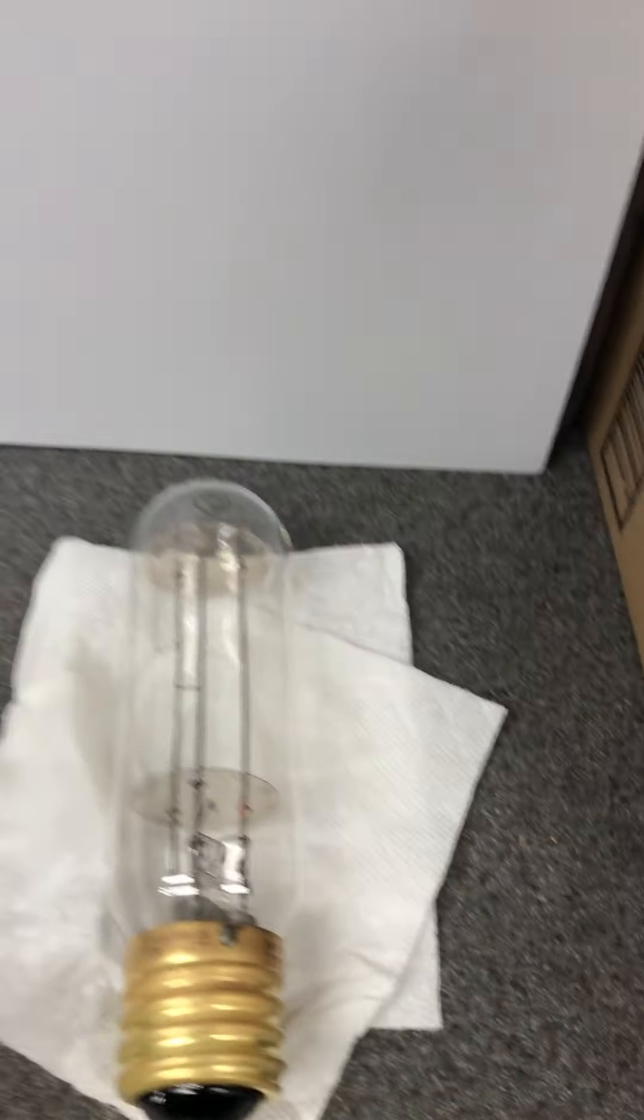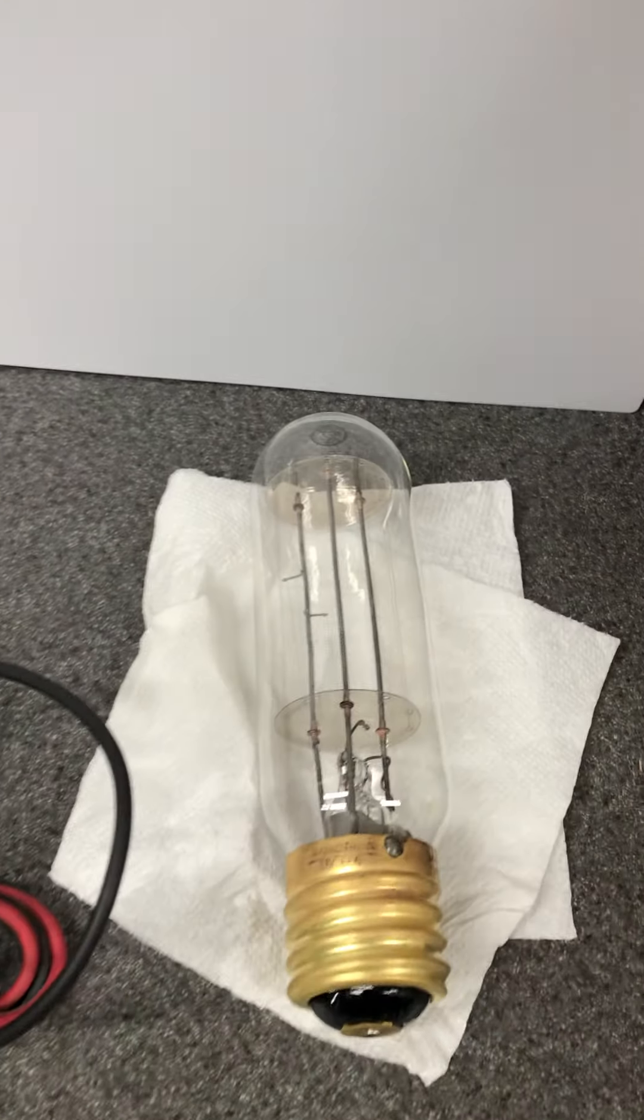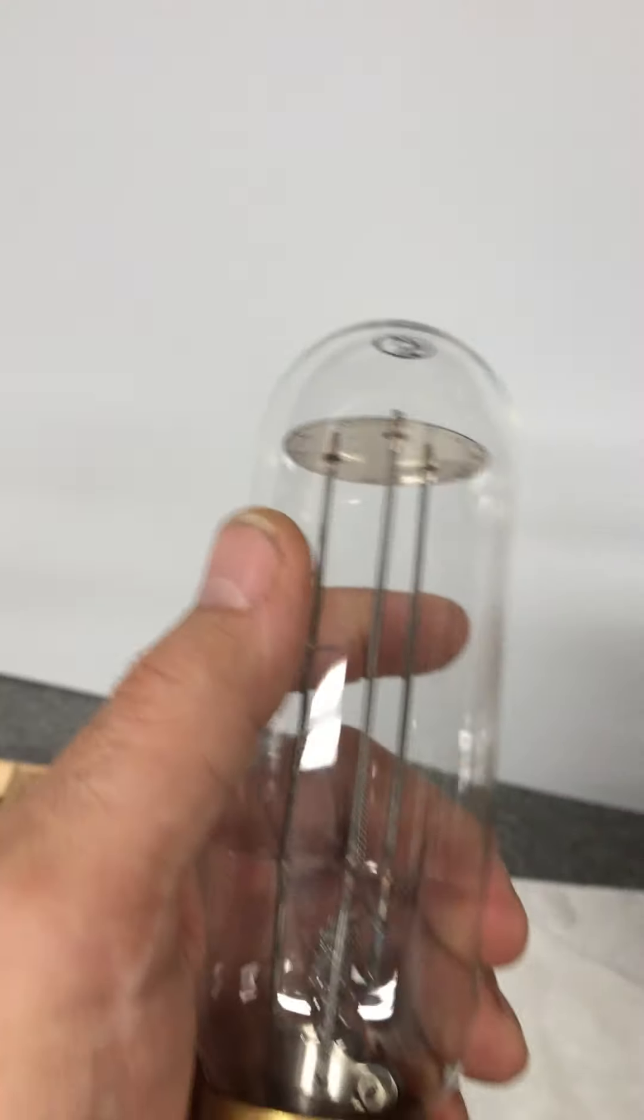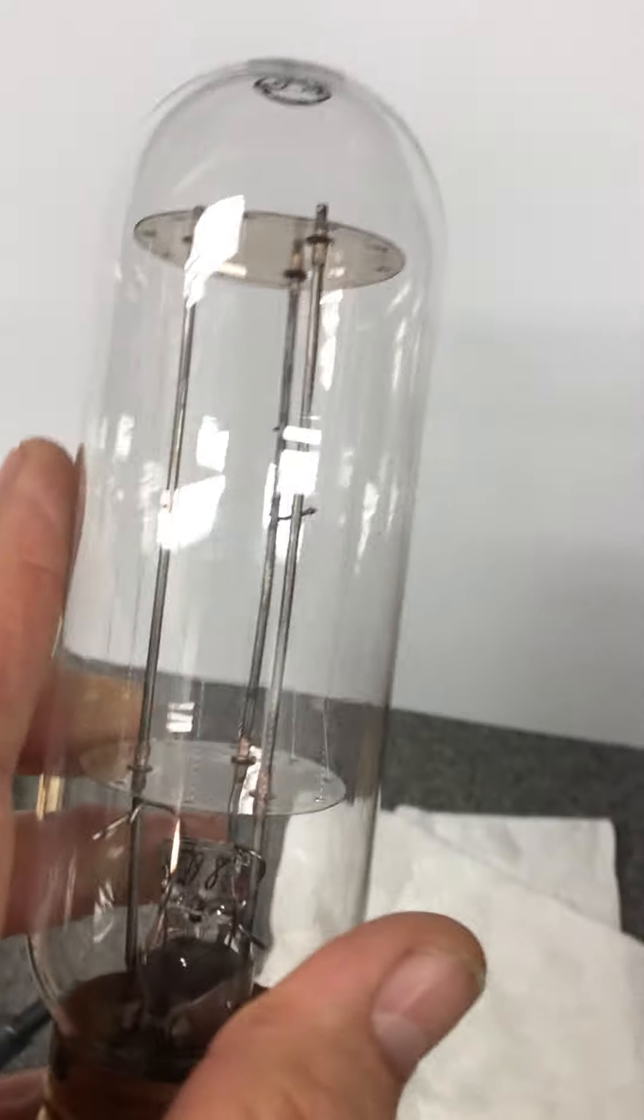Okay, what we're going to do today is test a new device that we got here courtesy of K7SS Dan over in West Seattle. He brought us a bulb, and we thought it was a bulb. It's an RCA Radiotron UV-886. We looked it up as some sort of a regulator.